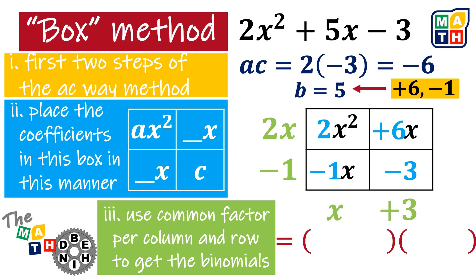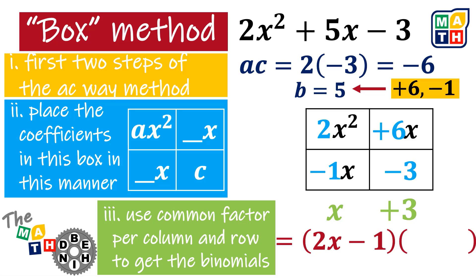We will then use these four common monomial factors to come up with our two binomials. The first binomial combines the two row factors 2x and minus 1, while the second uses x and plus 3. Hence, the factored form of the quadratic expression using the box method is the pair of binomials (2x minus 1) and (x plus 3).